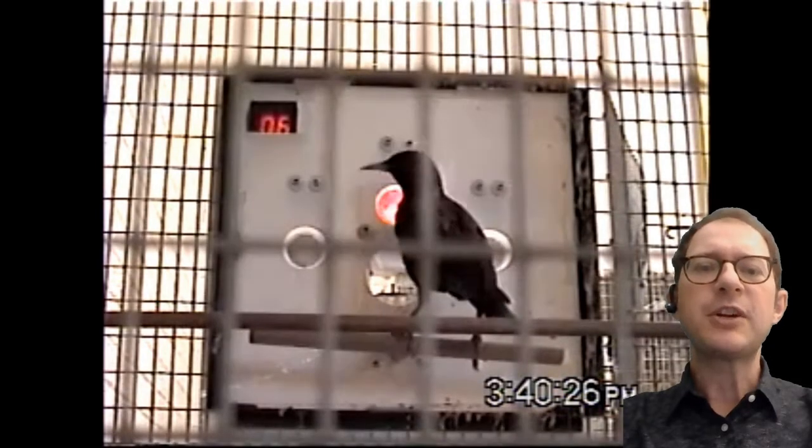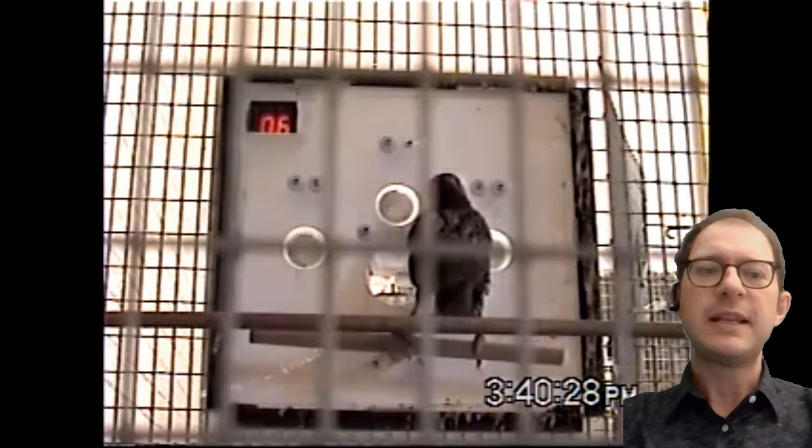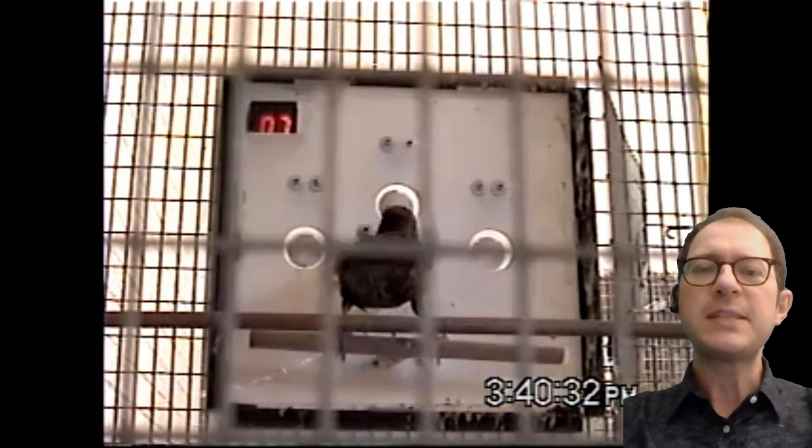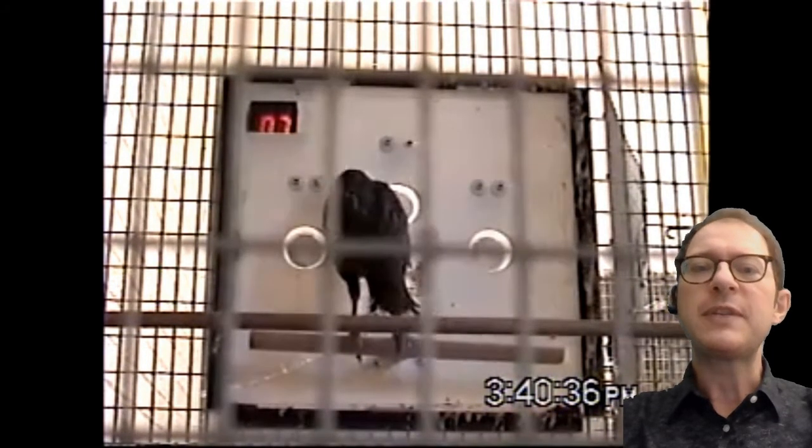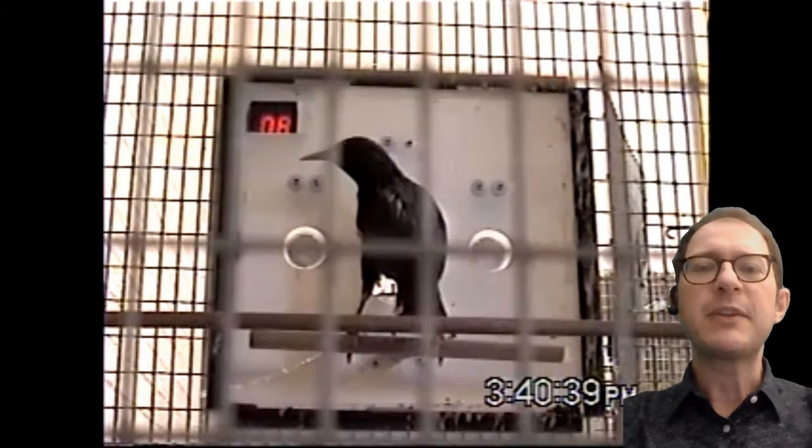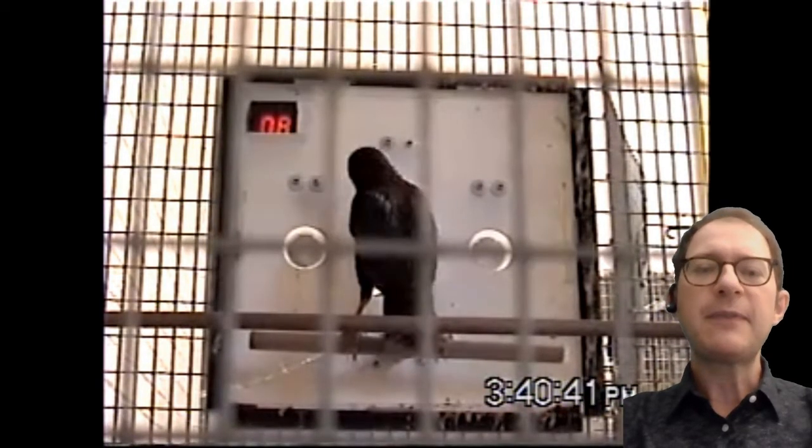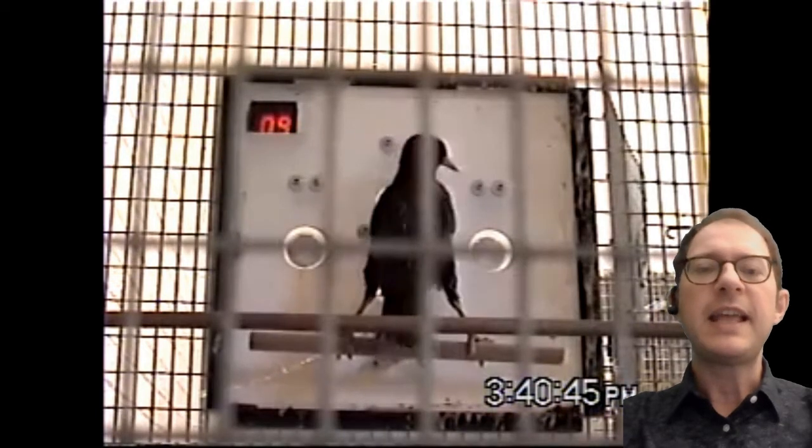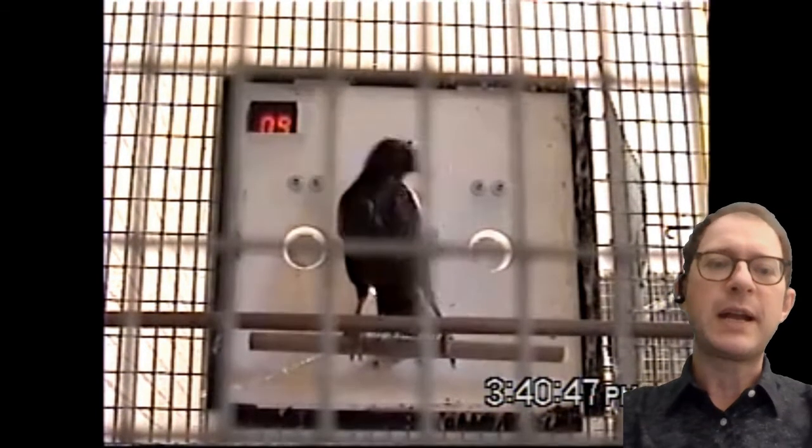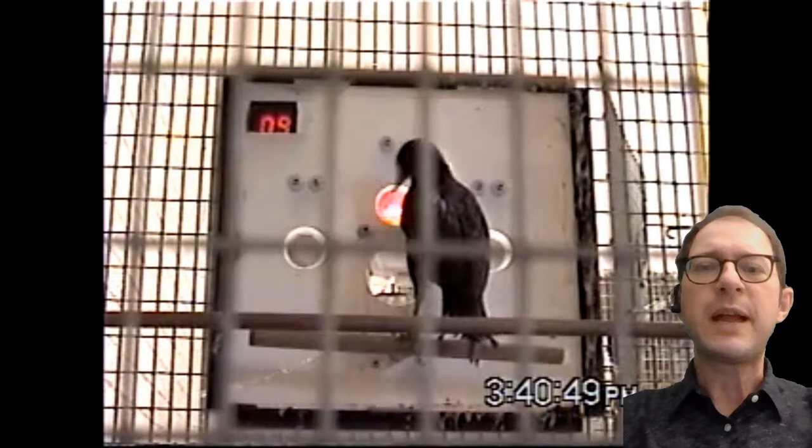Here is a video of a starling in a DMTS experiment. The experiment requires the bird to first peck at the sample, which is displayed always on the center key. This is to make sure that the animal has actually seen the sample. In this case the sample can be a red or a green light. After a short delay the choice stimuli appear, again red and green, and the starling has to peck the correct one. This starling is doing pretty well on average.